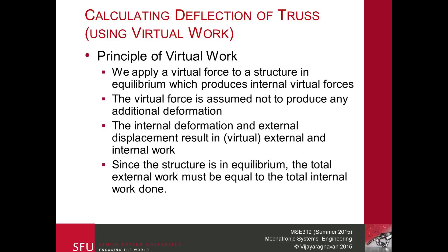First we need to understand how we use the method of virtual work to find deflection of a truss. This can be the deflection along any particular point. The principle of virtual work is that we apply a virtual force to the structure which is in equilibrium to produce internal virtual forces. This is solved using the same static principles — either method of sections or method of joints. The virtual force, since it is virtual, is assumed to produce no additional deformation inside the structure. The internal deformation and the external displacement result in virtual external and internal work. Since the structure is in equilibrium, the total external work must equal the total internal work done.